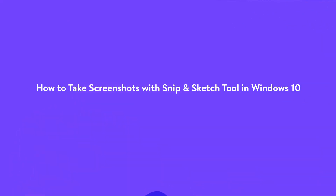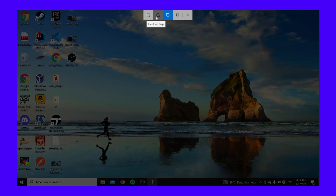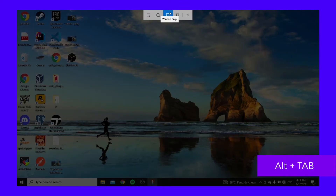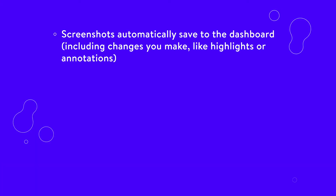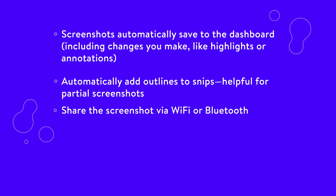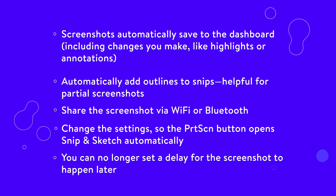In Windows 10, you also have access to the new and slightly improved Snip & Sketch app. You can open it the same way by searching the menu, or use the built-in shortcut Shift plus Windows plus S. That will automatically open the app menu for taking a screen snip. Here you can choose from Window, Freeform, Fullscreen, or Rectangle options for your snapshot. With the Window Snip option, it doesn't automatically capture the active window — you can switch tabs with Alt plus Tab and then click the specific window you want to capture. Compared to the original version, screenshots automatically save to the dashboard including highlights or annotations, outlines are automatically added to snips, and you can share via Wi-Fi or Bluetooth. You can also change settings so the Print Screen button opens Snip & Sketch automatically. However, you can no longer set a delay for the screenshot to happen later.